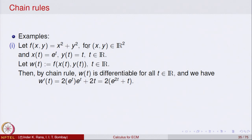The partial derivative of f with respect to x is 2x, with y kept constant. Since x = e^t, the first term is 2·e^t · dx/dt. Because x(t) = e^t, its derivative is e^t itself. The partial derivative of f with respect to y is 2y, and y = t, giving 2t · dy/dt. Since dy/dt = 1, that is simply 2t. Using chain rule, the derivative of w with respect to t simplifies to 2(2e^(2t) + t).